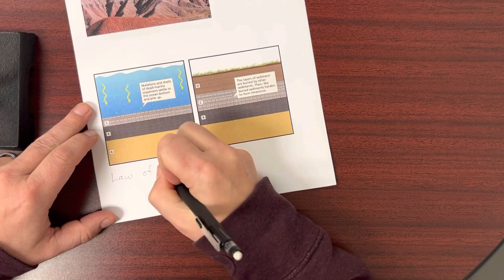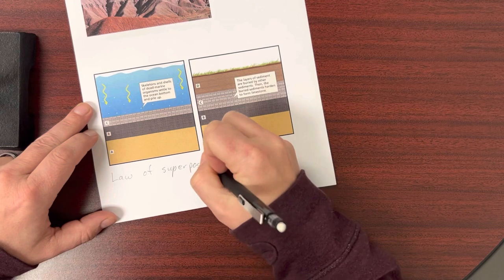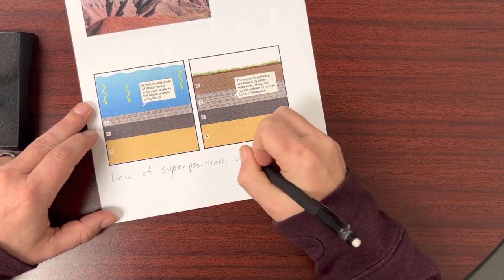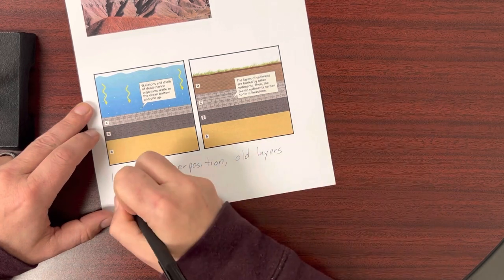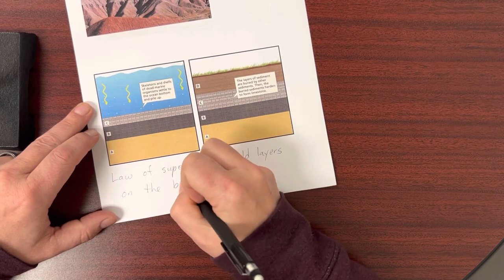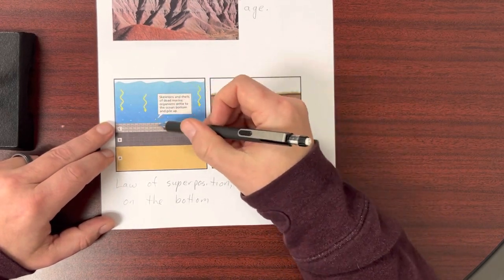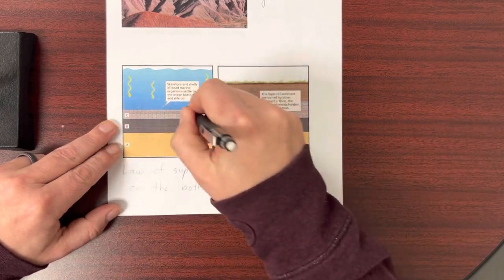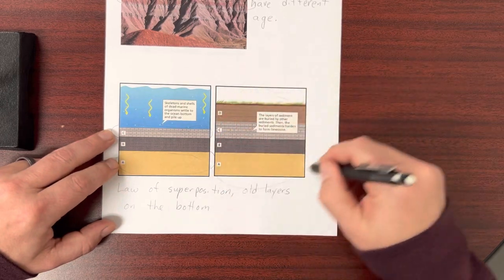And law of superposition just says that the older rock layers, generally speaking, are on the bottom and the younger rock layers are on the top. So in our example here, you've got rock layers forming as sediment sinks down. This A layer, being on the bottom, is the oldest. This layer C, right here, is the youngest. And the same thing could be applied to this image.